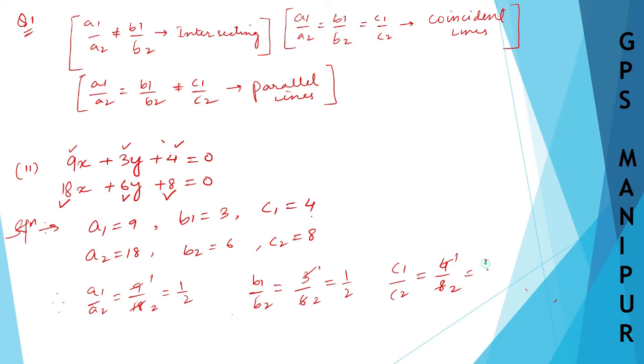And c1 by c2 will be equal to 4 by 8, which will be 1 by 2. Since all three are equal—a1 by a2 equals b1 by b2 equals c1 by c2—therefore, if a1 by a2 equals b1 by b2 equals c1 by c2, then it is coincident lines.